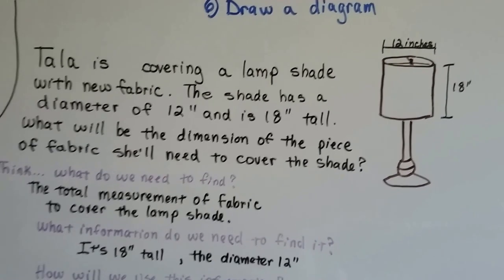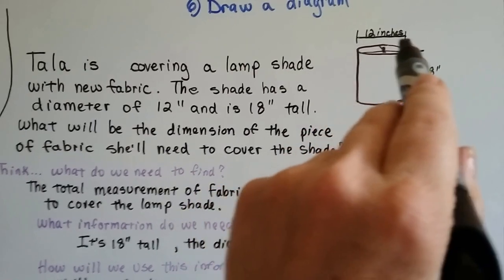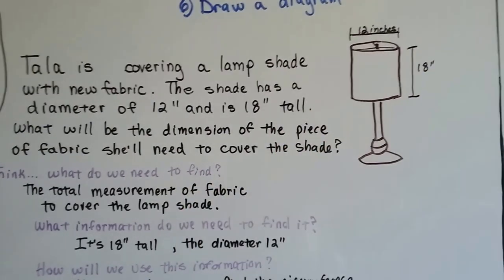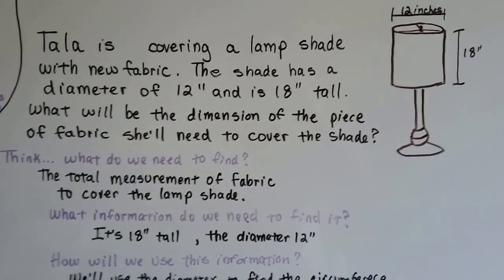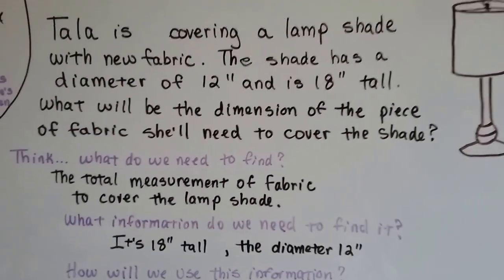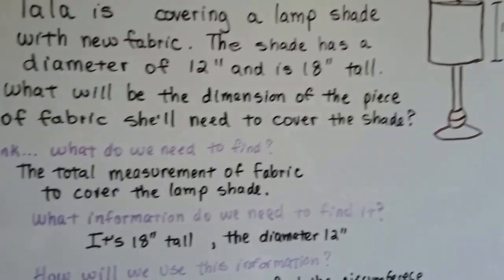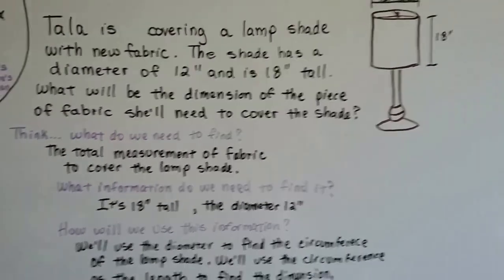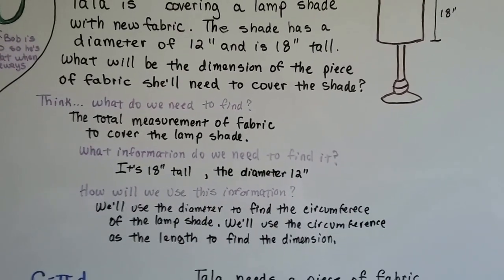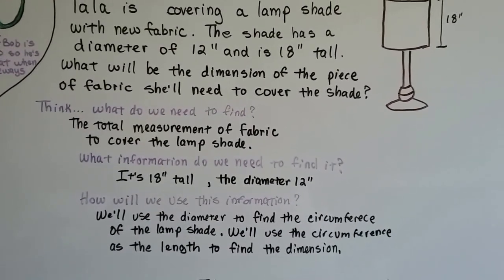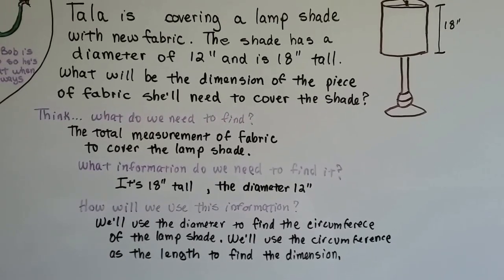Okay. Tala is covering a lampshade with new fabric. The shade has a diameter of 12 inches. So across here it's 12 inches. And it's 18 inches tall this way. So what would be the dimension of the piece of fabric she'll need to cover the shade? So think, what do we need to find? We need to find the total measurement of the fabric to cover that lampshade. What information do we need to find it? Well, it's 18 inches tall and the diameter is 12 inches. And how will we use this information? We'll use the diameter to find the circumference of the lampshade and we'll use the circumference as the length of the dimension.